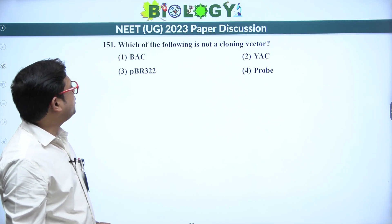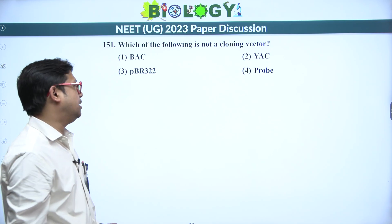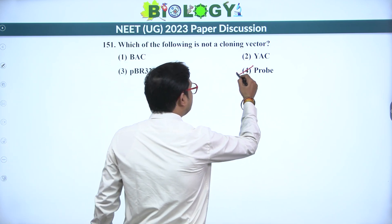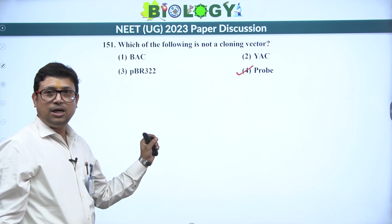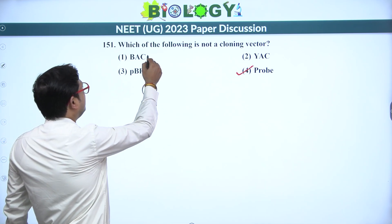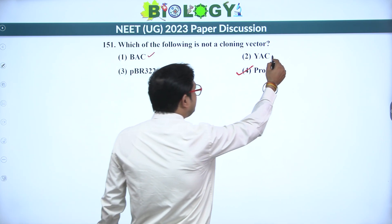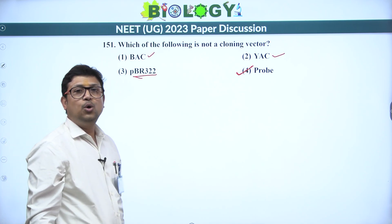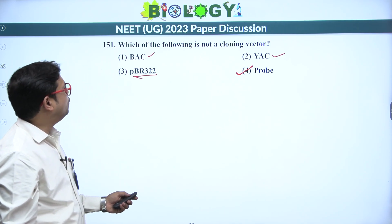Next: which of the following is not a cloning vector? A probe is a short sequence of nucleic acid, not a cloning vector. Whereas bacterial artificial chromosome, yeast artificial chromosome, and pBR322 are all cloning vectors. So the answer is the fourth option.